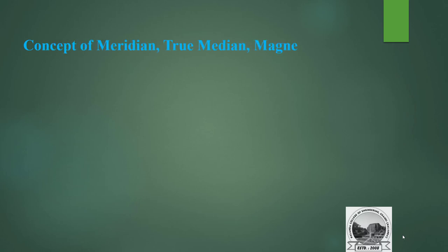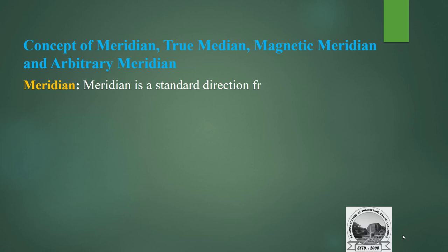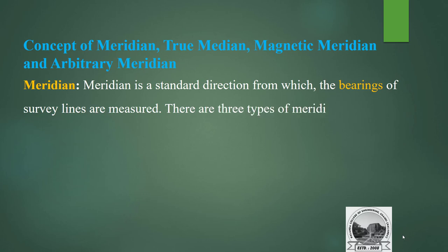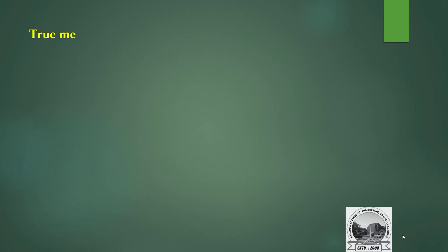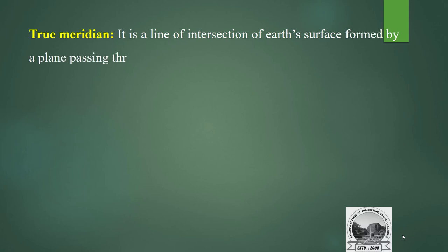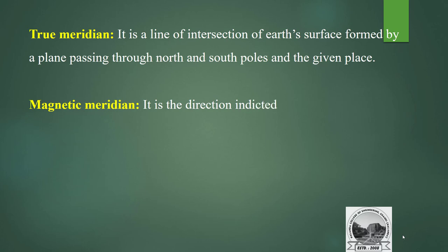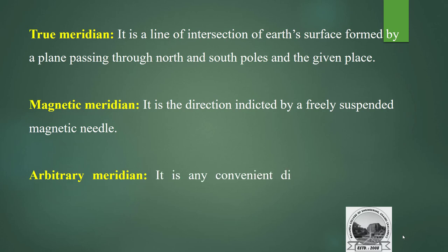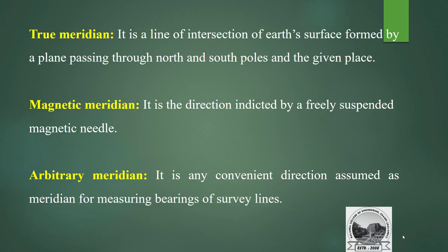Meridian is a standard direction from which the bearing of survey lines are measured. There are three types of meridian: true meridian, magnetic meridian, and arbitrary meridian. True meridian is defined as the line of intersection of the earth's surface formed by a plane passing through the north and south poles and the given place. Magnetic meridian is defined as the direction indicated by a freely suspended magnetic needle. Arbitrary meridian is any convenient direction assumed as the meridian for measuring the bearing of a survey line.